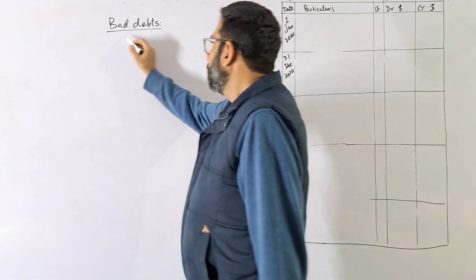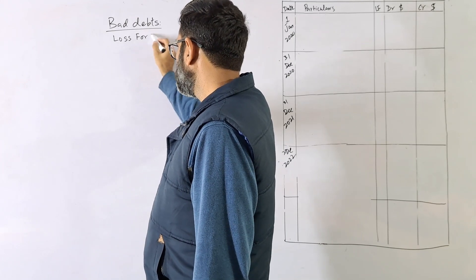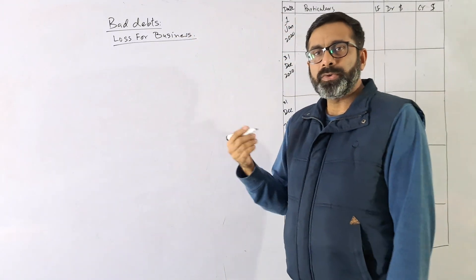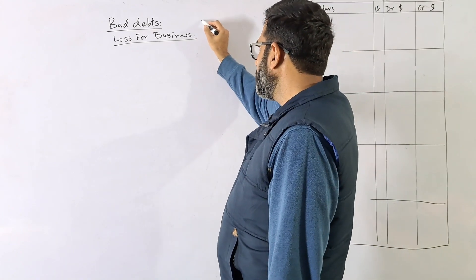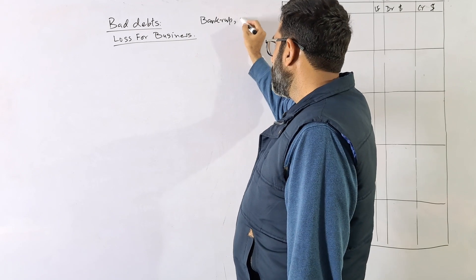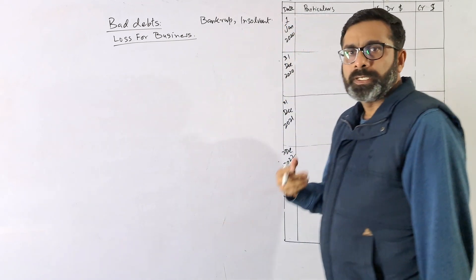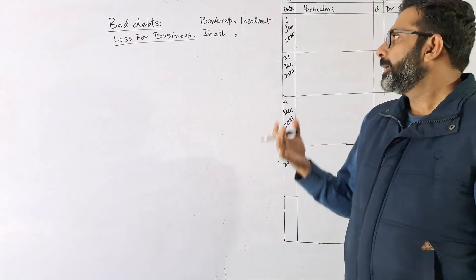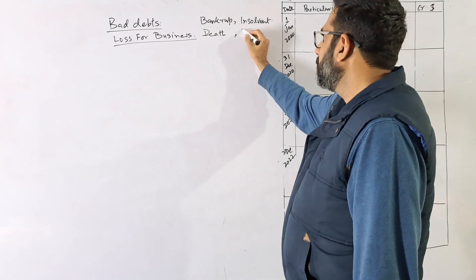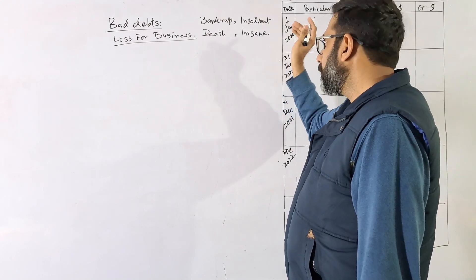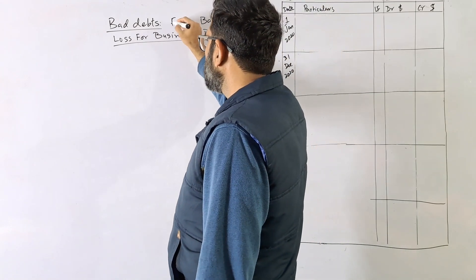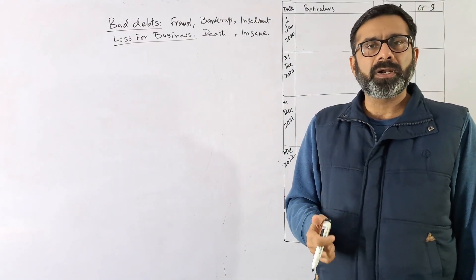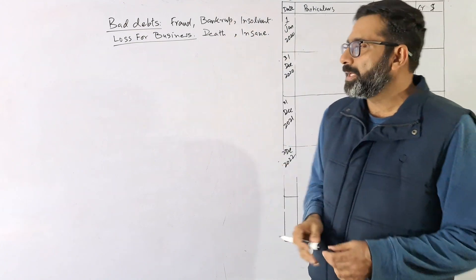Bad debt is simply a loss for business because you are unable to recover the money from the customer. The customer may be bankrupt, insolvent, or if the person is a sole owner, you may be unable to receive money due to their death or insanity. There is also the possibility of fraud — sometimes the customer purchases goods with no intention to pay. These are the major reasons for bad debts.